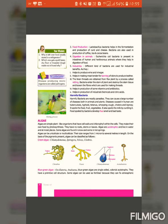So students, algae are simple plant-like organisms that have cell walls and chlorophyll within the cells, and they make their own food by photosynthesis. You can say that algae is a plant-like organism because they have chlorophyll and they make their own food through the process of photosynthesis. They don't have roots, stems, and leaves, so they have a simple structure.